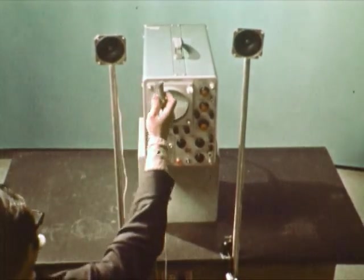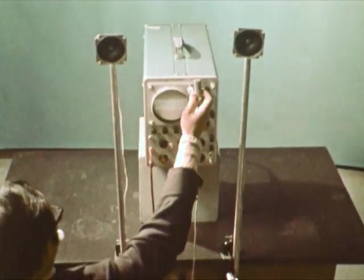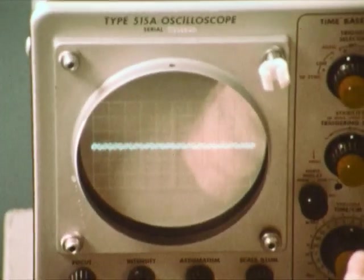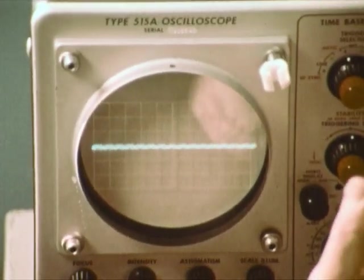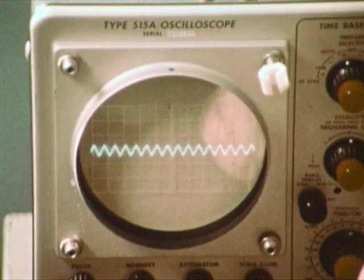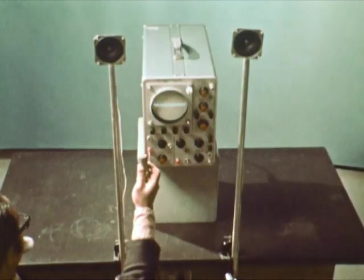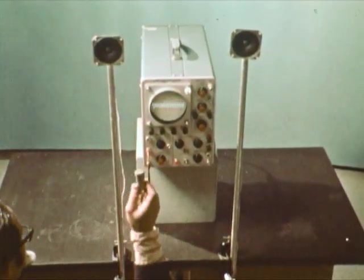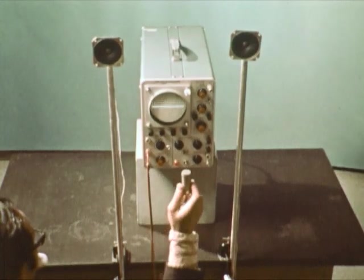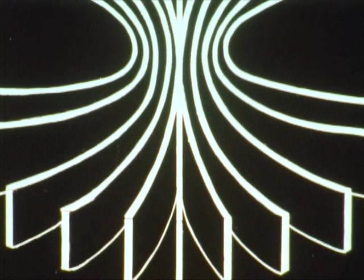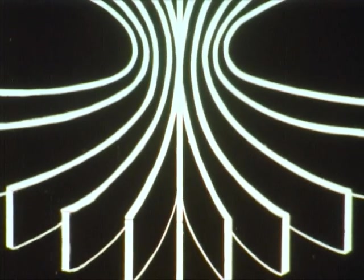These two speakers send out pure sound waves of identical frequency and amplitude. The microphone records areas of calm and motion. If we could see the three-dimensional interference pattern caused by the two sound sources, it would look like this.